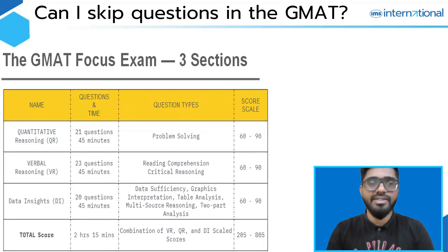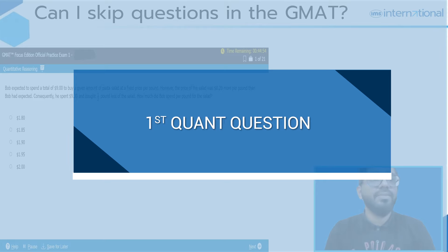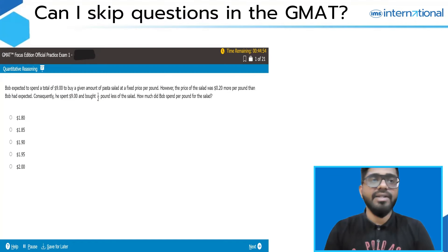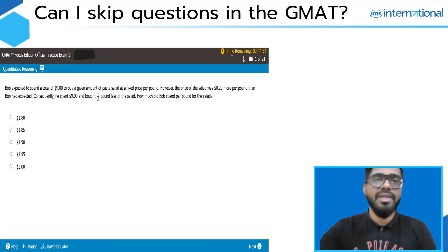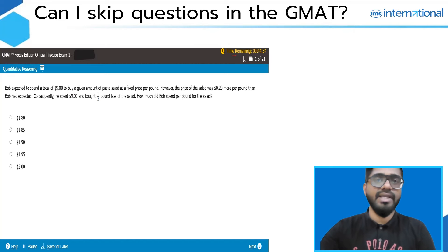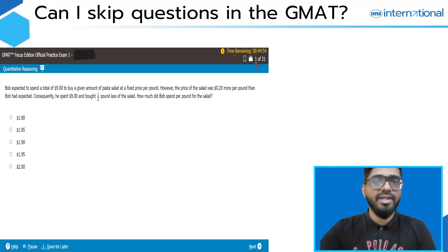Let's consider this question. This question is from the official practice exam one, which is on mba.com, and this is how the interface of the main exam would look like. On the top right corner, you can see the remaining time — I still have 44 minutes and 54 seconds left to answer my questions, and I'm on question number one currently.